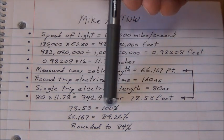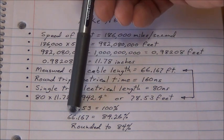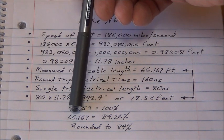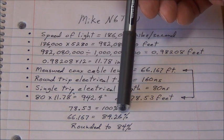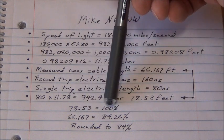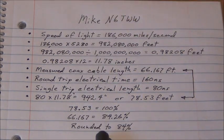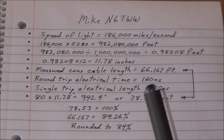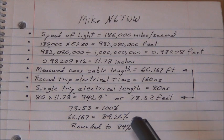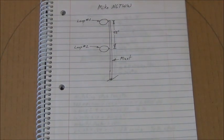So if that is 100 percent, that's the speed of light, and our actual measured length is 66.167, that's 84.26 percent of 100 percent or of 78.53. So I just rounded that to 84 percent. So that's what I'm going to use as my velocity factor for this coax when I cut the coax to the right length.